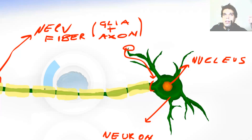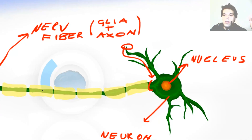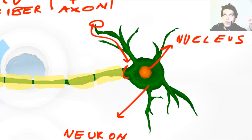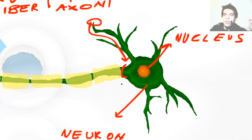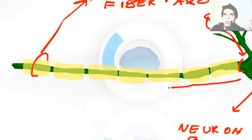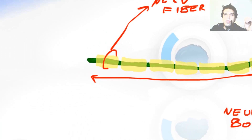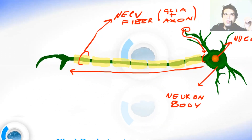It can be a myelinated or non-myelinated nerve fiber. Myelin is an electrical insulating material — it electrically insulates the axon so the axon transfers the signal faster. The axon transfers the signal from the cell body towards the end of the axon, which is called the axon terminal.